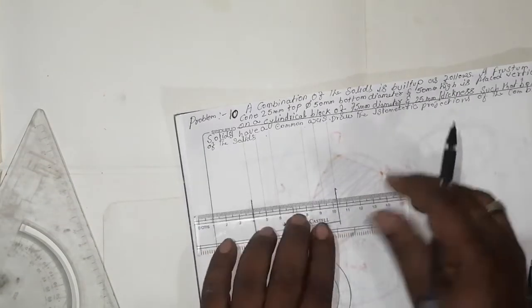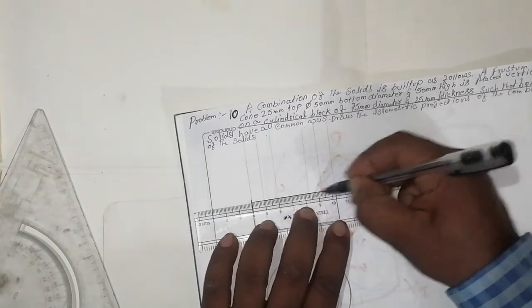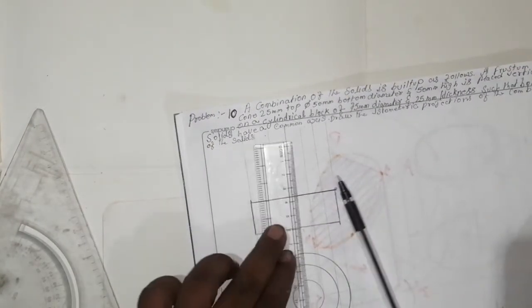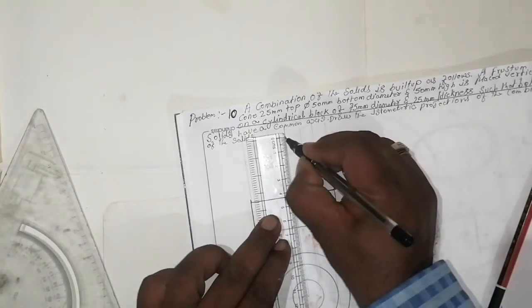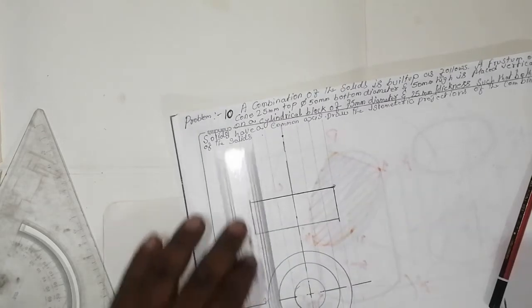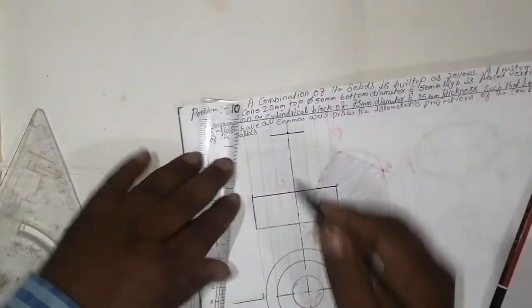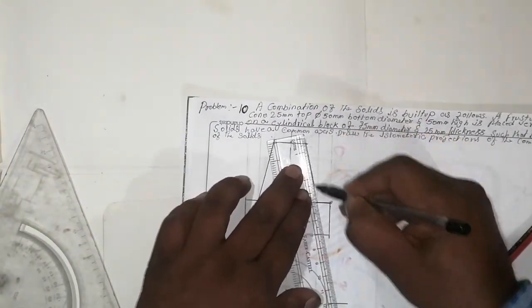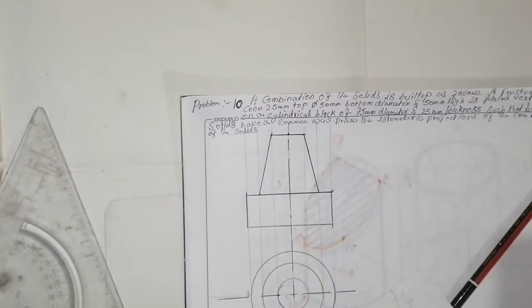Take here 50mm. This will be the axis line. The height is 50mm. So that will be 50mm. Now we have to draw the isometric block — I'll show you how to draw an isometric block.